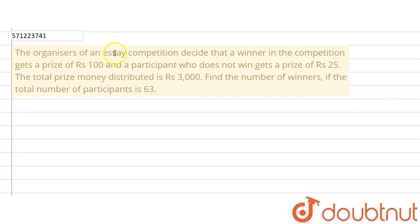The given question says that the organizers of an essay competition decide that the winner in the competition gets a prize of Rs. 100, and a participant who does not win gets a prize of Rs. 25. The total prize money distributed is Rs. 3000. Find the number of winners if the total number of participants is 63.